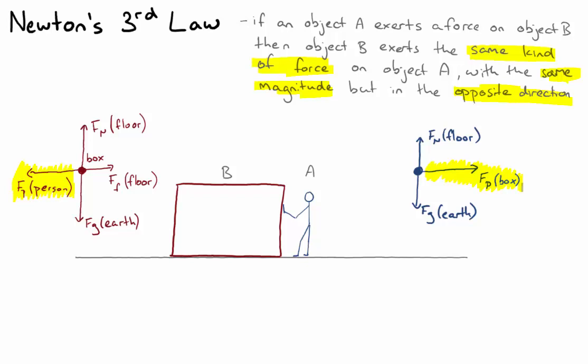The pair of forces are acting on different objects. One is acting on the box, and the other is acting on the person. It's just that one object acts on the other.